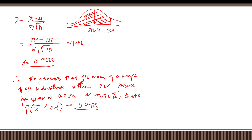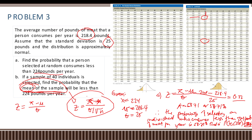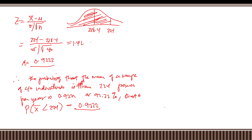Therefore the probability that the mean of a sample of 40 individuals is less than 224 pounds per year is 0.9222, or 92.22 percent. Comparing the two: the probability for an individual is 58.71%, while for the sample mean it is 92.22%. This large difference is due to the fact that the distribution of the sample mean is much less variable than the distribution of individual data values.